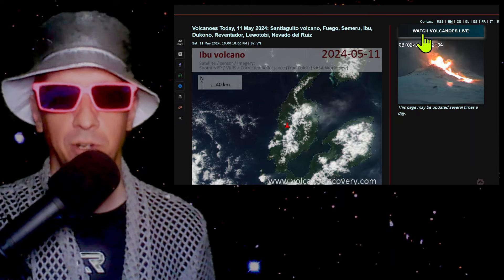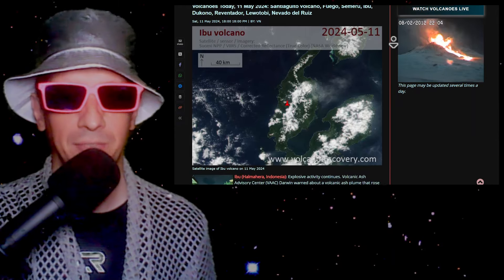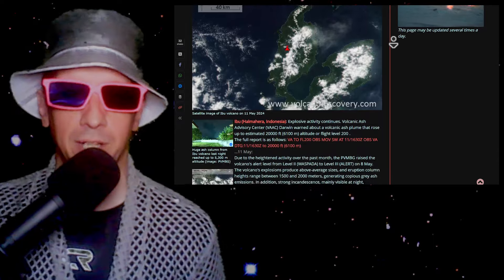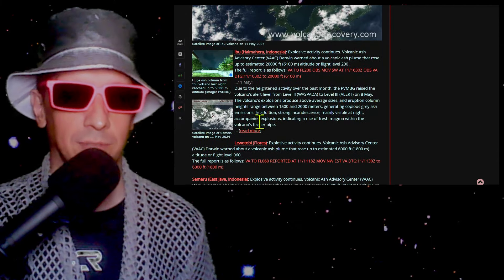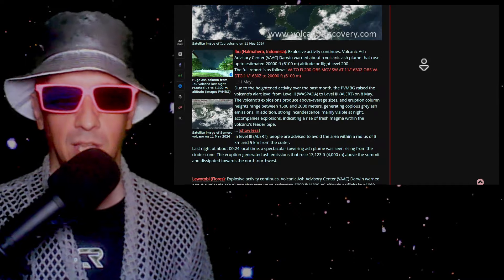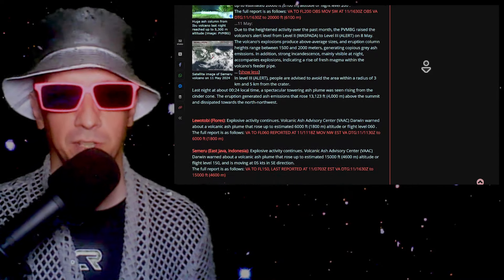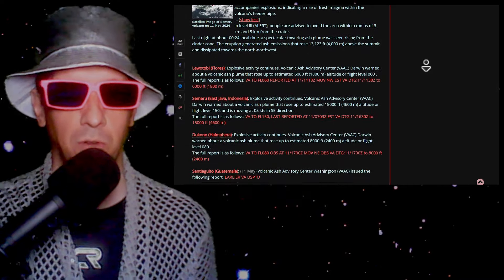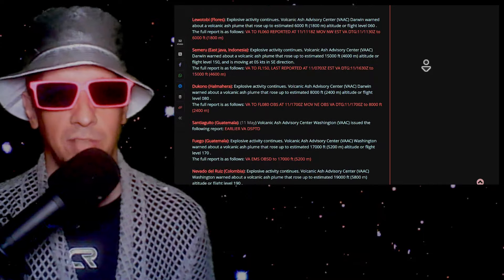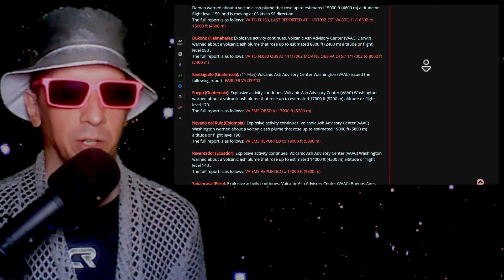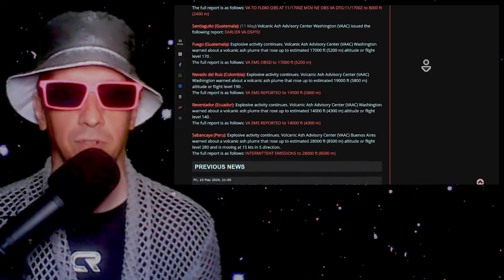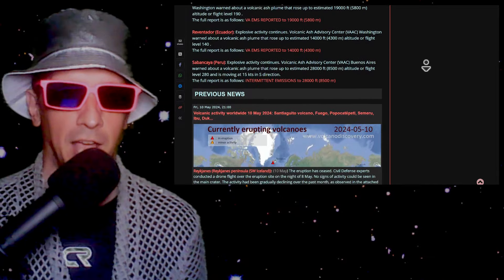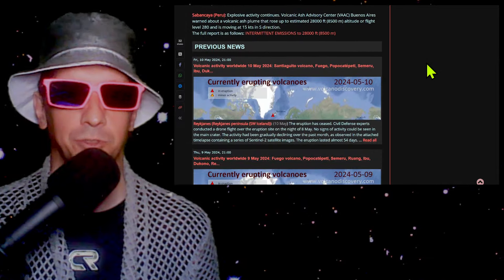We'll briefly look at volcanoes and earthquakes here, although we're not too concerned about that. Eboo is exploding. You've got a 20,000-foot ash plume there over Eboo. That's a significant thing. Please do not pole vault the caldera at Eboo. Also, Luotobi exploding. Semeru, Decono, Sanche Guido, Fuego, Navarro de Ruiz, Reventador, and Sabankaya. 28,000-foot ash plume there over Sabankaya. It's a flight level 280.